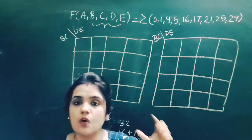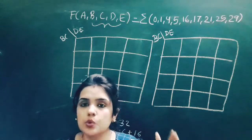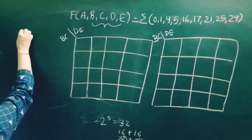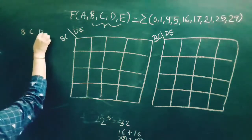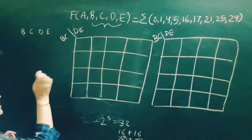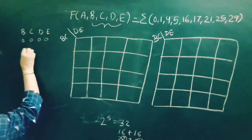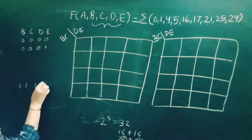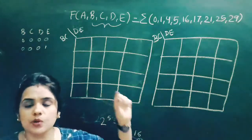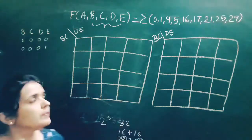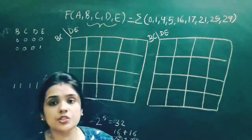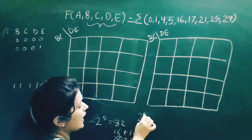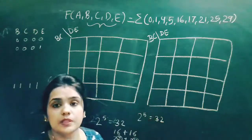b, c, d, e are 4 variables and there are 16 possible combinations of 4 variables, from 0,0,0,0 up to 1,1,1,1. But here we have 5 variables in the function, and 5 variables will have 32 total combinations.